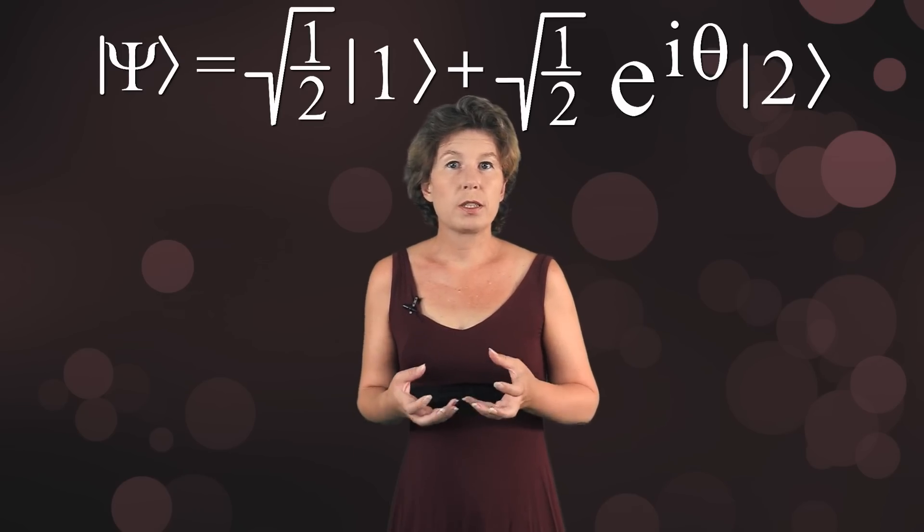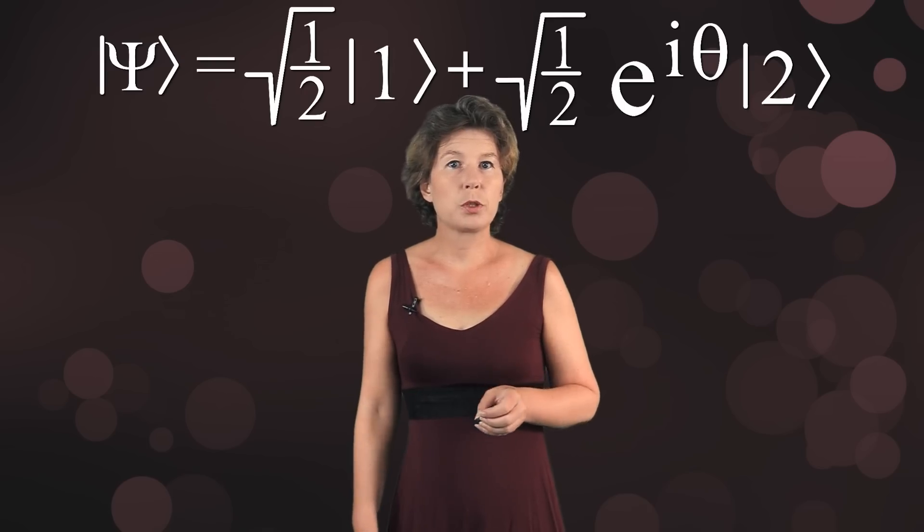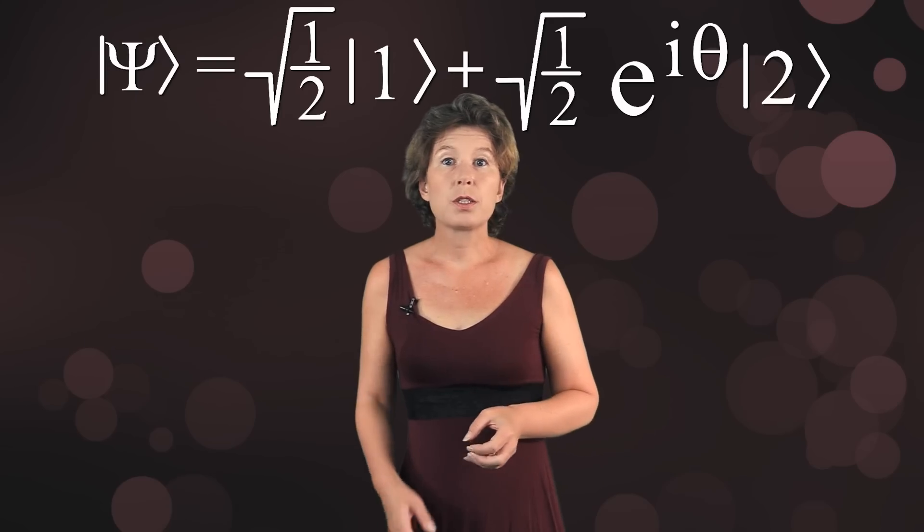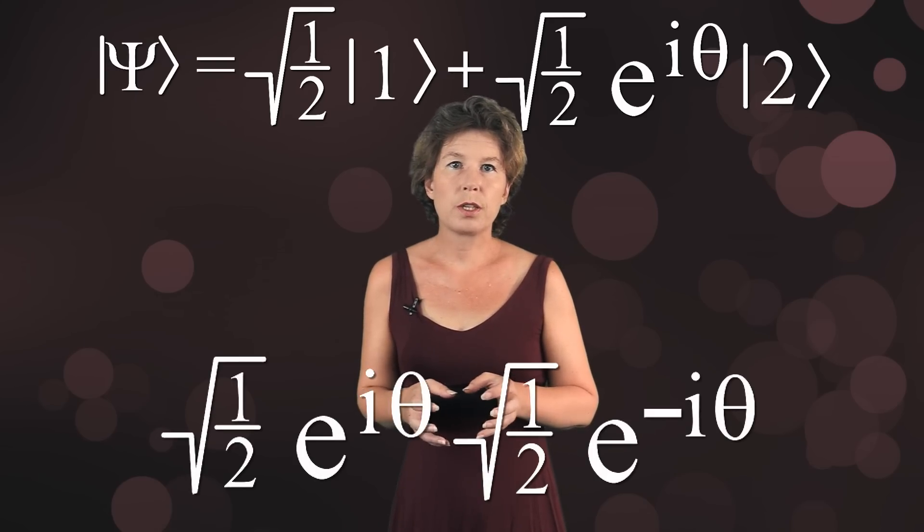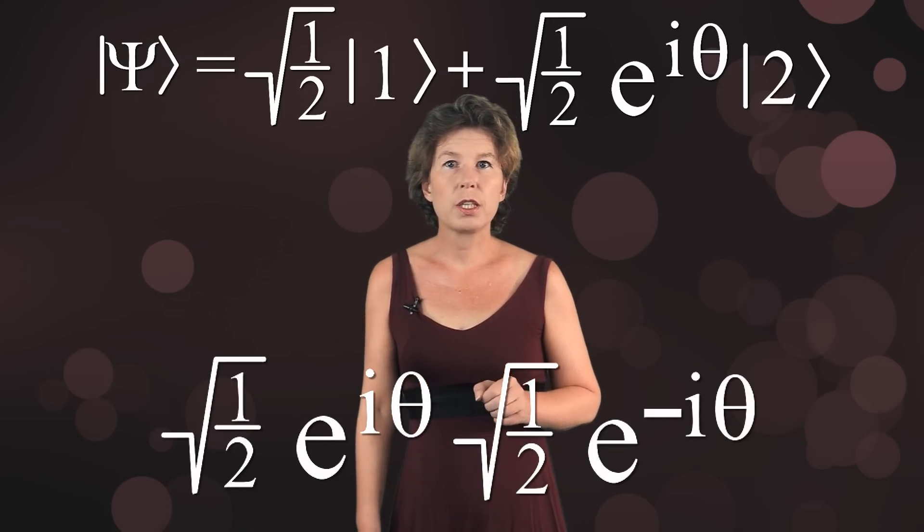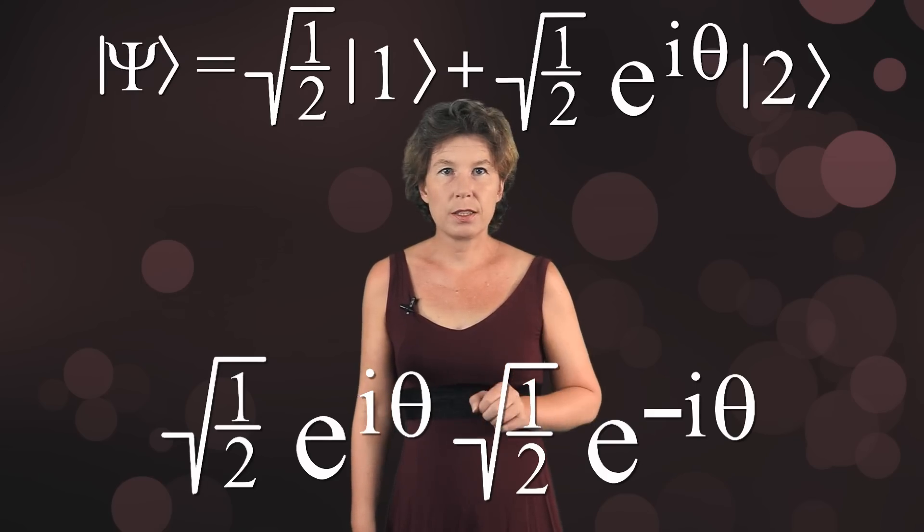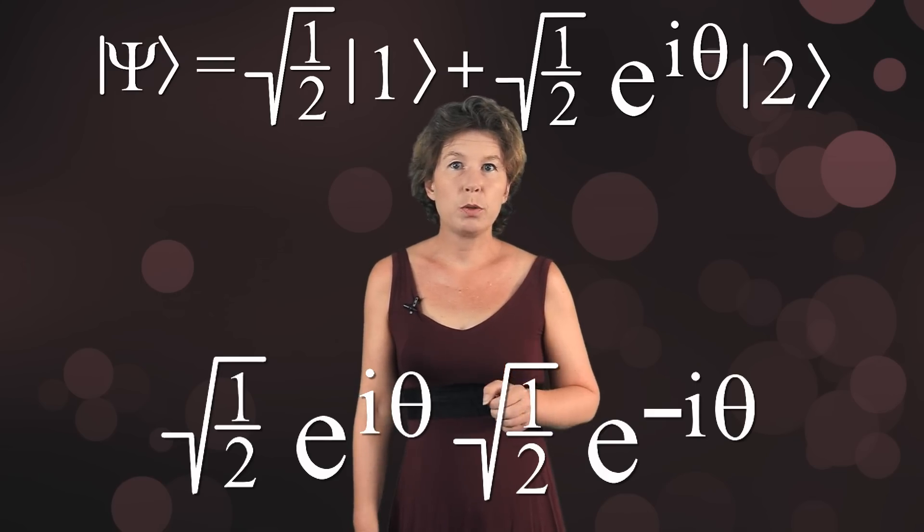See, if we ask what is the probability of finding this superposition in state two, then this would be one over square root of two times e to the i theta times the complex conjugate, which is one over square root of two times e to the minus i theta, and that comes out to be one half, regardless of what theta is.